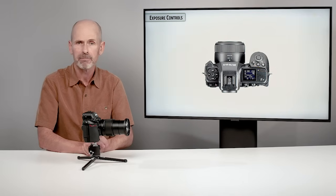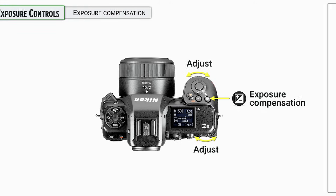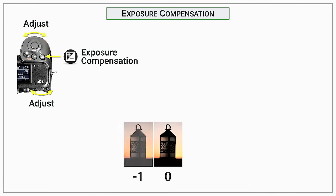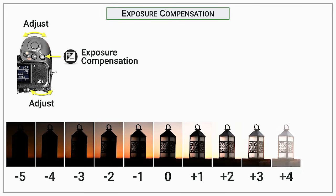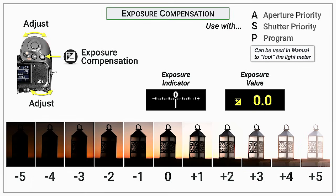Next: exposure compensation — a quick way to make photos lighter or darker. Press the plus/minus button and turn either the main or sub command dial. Use this when in aperture priority, shutter priority, or program mode and you're not happy with the brightness. You'll see the result expressed either graphically in the exposure indicator or numerically as an EV value. Normally keep this set to zero.